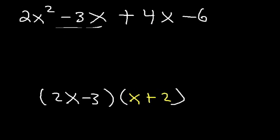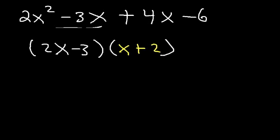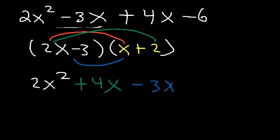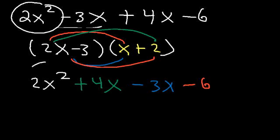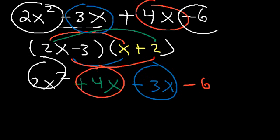You can check your work by FOILing the result. 2x times x is 2x squared, 2x times 2 is 4x, negative 3 times x is negative 3x, and negative 3 times 2 is negative 6. As you can see, we get back 2x squared minus 3x plus 4x minus 6 — the same expression we started with.